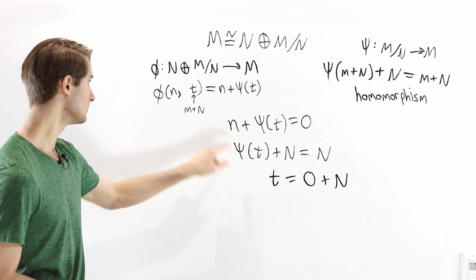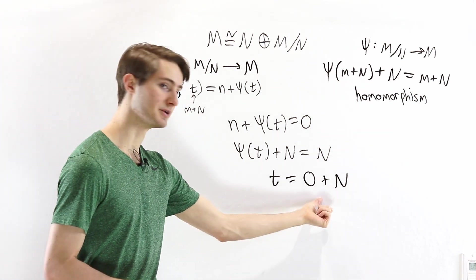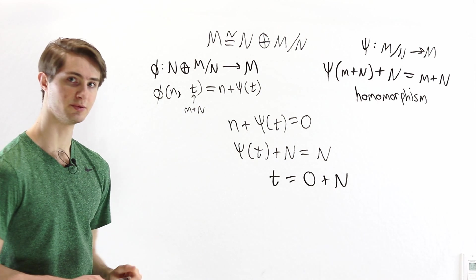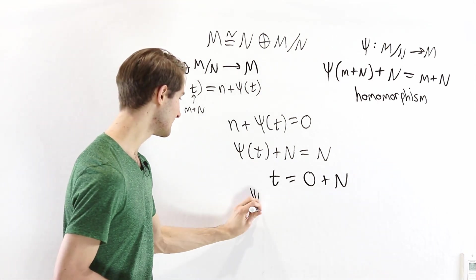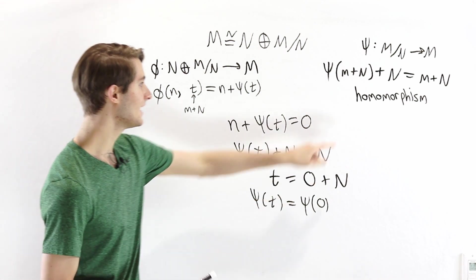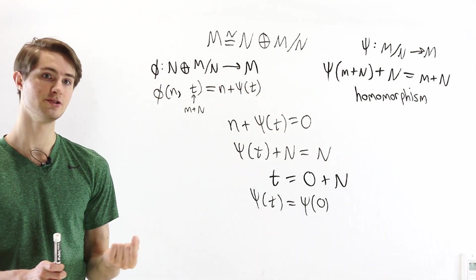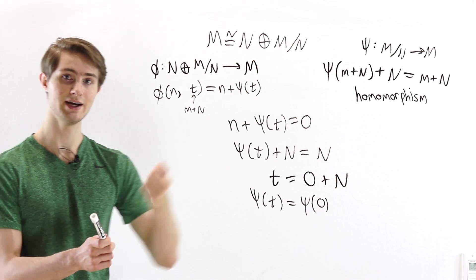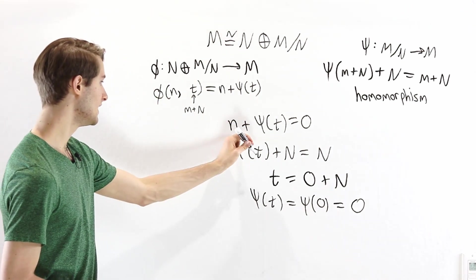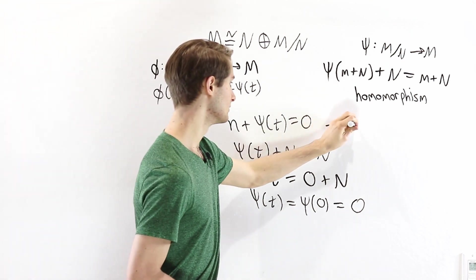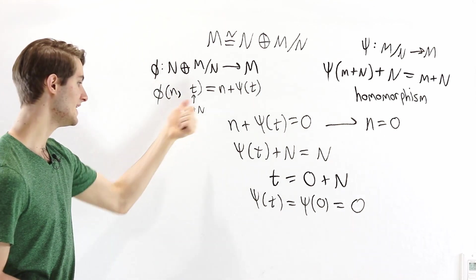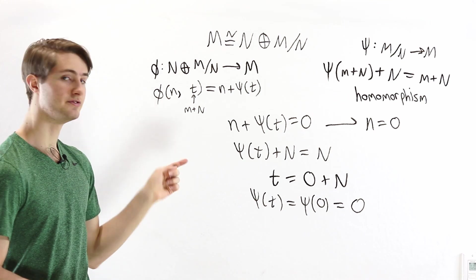So we've shown that t equals zero. We also need to show that n equals zero. We can do that by applying ψ to both sides of our equation: since t = 0, ψ(t) = ψ(0). But ψ is a homomorphism, and a homomorphism always maps the group identity to the group identity, so ψ(0) = 0. Therefore n + 0 = 0, which means n = 0. We have both conditions — n = 0 and t = 0 — so φ is injective.